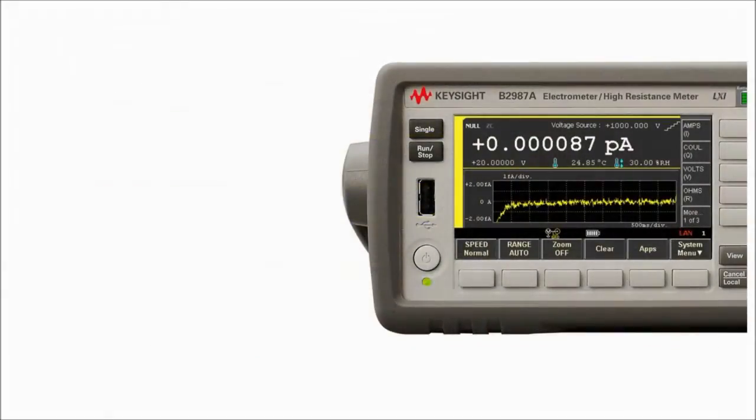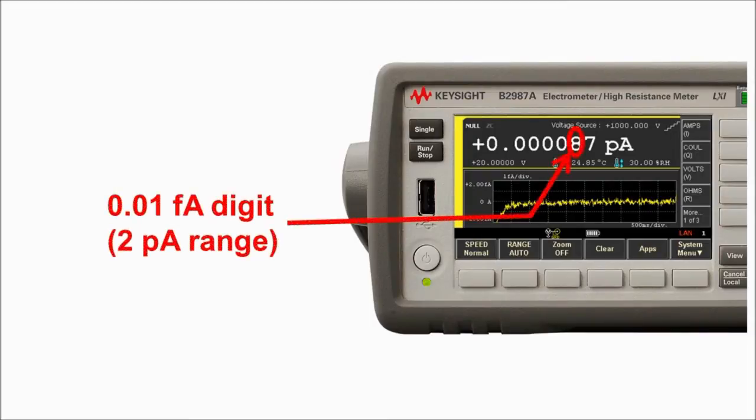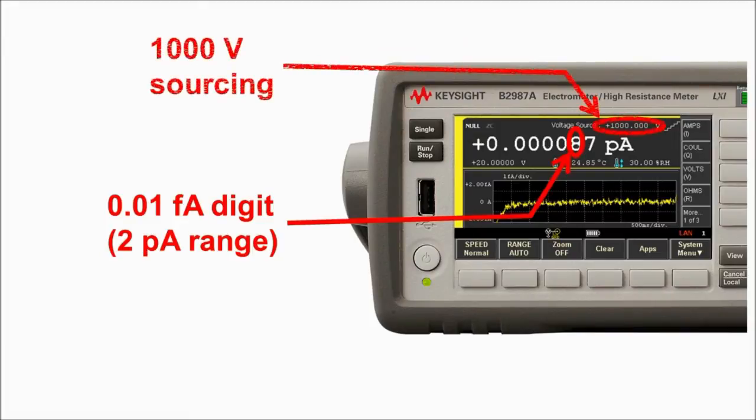Each instrument has a 2 picoamp current measurement range with 0.01 picoamp minimum resolution. In addition, the electrometers allow up to 10 peta-ohms resistance measurements using a built-in 1000 volt voltage source.